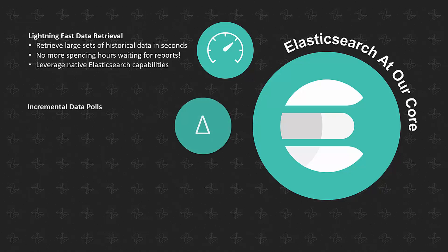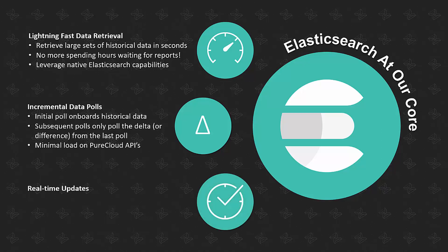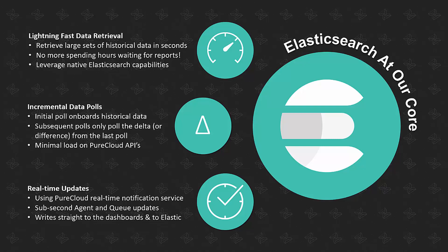Another thing that Emite does is incremental data polls. So after the initial poll at the start, we only poll the difference from the last set of data, which means we have a very minimal load on PureCloud itself. And lastly, we receive real-time updates from PureCloud's notification service, which means we get sub-second agent and queue data showing up within our dashboards. This gets written straight to the dashboards and also to Elastic.